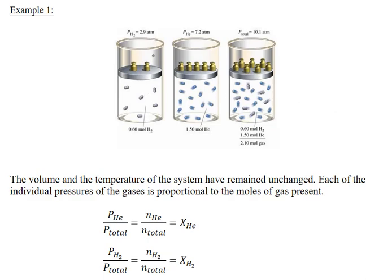Looking at another example to give a visual of individual gases and then gases in a mixture: if we have a sample of hydrogen gas at 2.9 atmospheres and a sample of helium gas at 7.2 atmospheres, when we combine those gases the total pressure equals the sum of the pressures — that's what Dalton's law tells us. The values given here are the moles: 0.6 moles of hydrogen, 1.5 moles of helium, and a total of 2.1 moles of gas in the mixture.